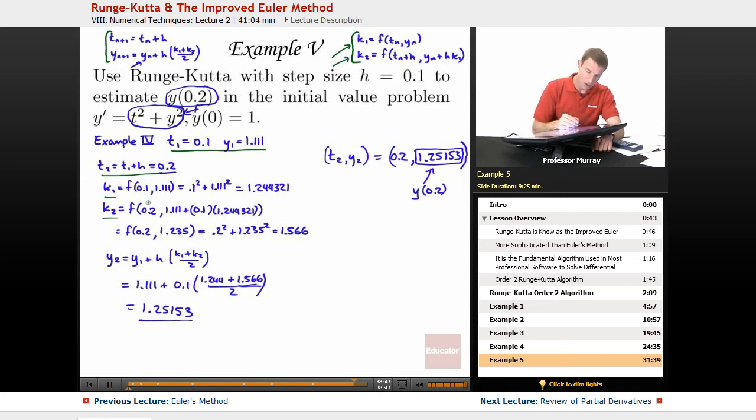I plugged in all the values. That's t1, that's y1, that's t1 plus h, and that's y1, that was my h, and this was k1. And then to calculate f of those values, I'm running t squared plus y squared. So that's why I'm doing 0.1 squared plus 1.111 squared, and here I'm doing 0.2 squared plus 1.235 squared.